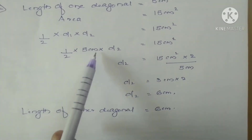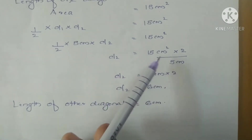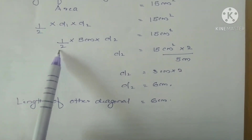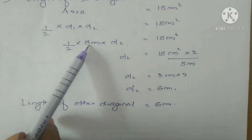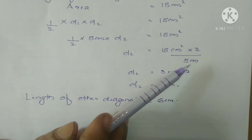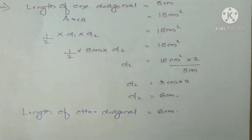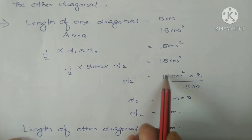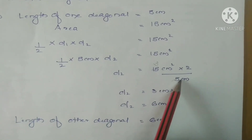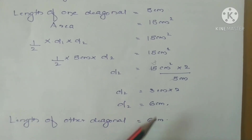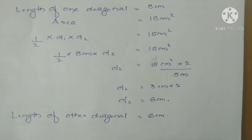We cannot do any simplification on the left side directly, so we take the half and 5 to the other side. D2 equals 15 into 2, divided by 5. We can simplify: 5 threes are 15, so 15 divided by 5 gives 3, and 3 into 2 equals 6. Therefore, the length of the other diagonal is 6 centimeters.